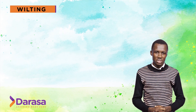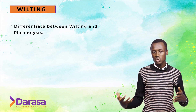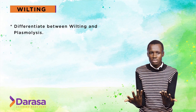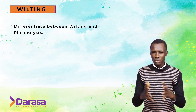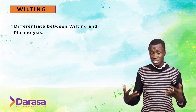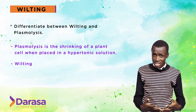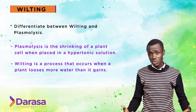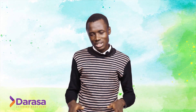A question may come: differentiate between wilting and plasmolysis. What is plasmolysis? Plasmolysis is the shrinking of a plant cell when placed in a hypertonic solution. Wilting is a process whereby a plant loses much more water than it actually gains. As simple as that. Thank you so much for keeping it right here on Darasa where learning is made easy. I've been your teacher, Mr. Ben.